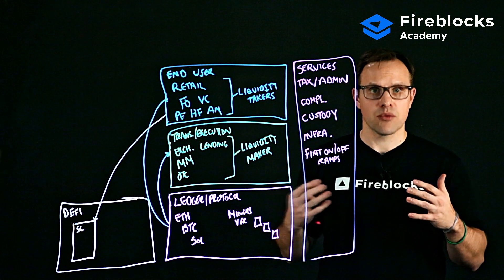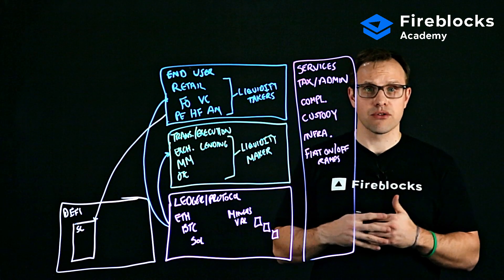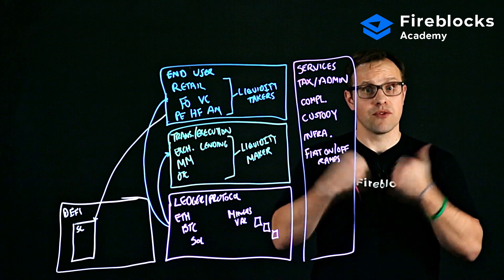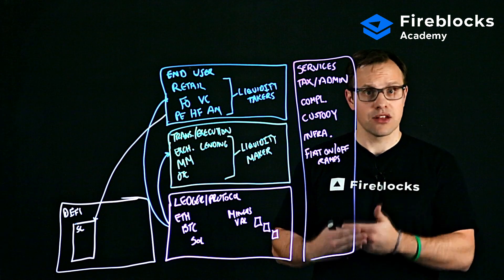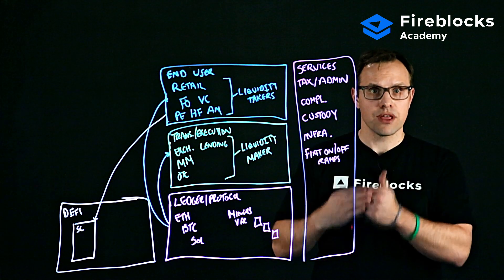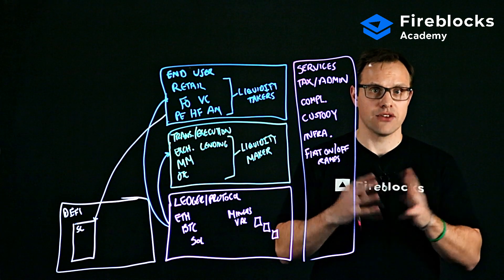So to summarize, this is a very broad categorization of the crypto capital markets. There are basically five different layers for you to think about from a very high level: the ledger and protocol layer, the transaction or execution layer, your end user layer, your DeFi layer, and your services layer.